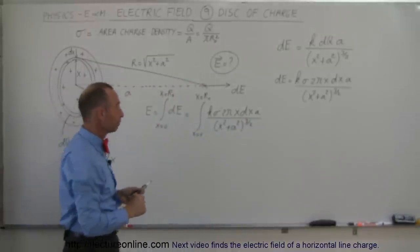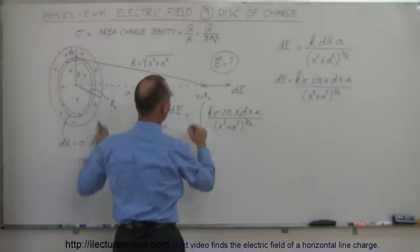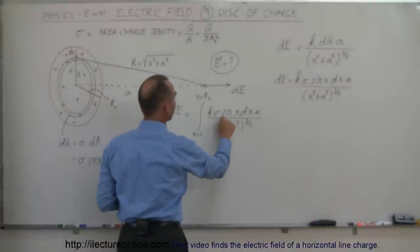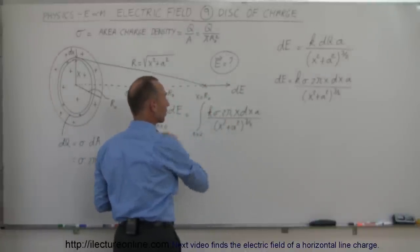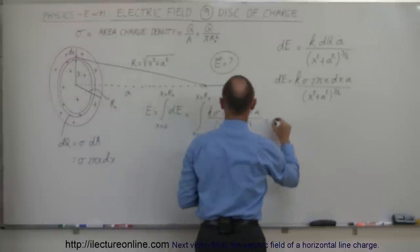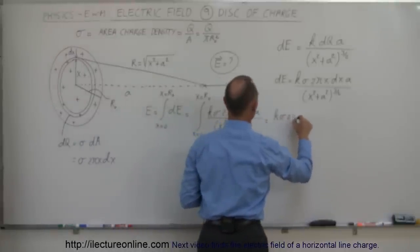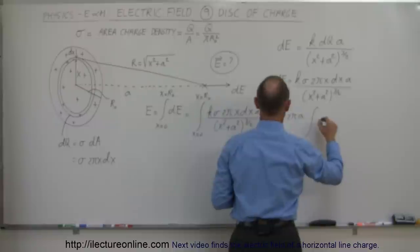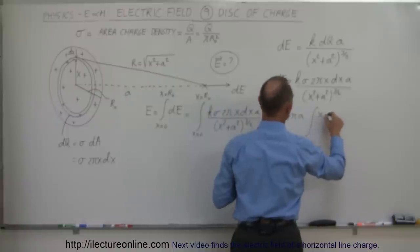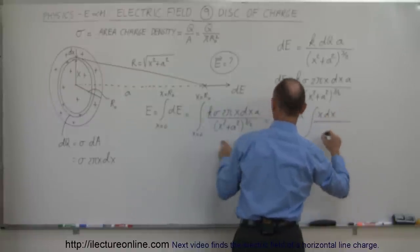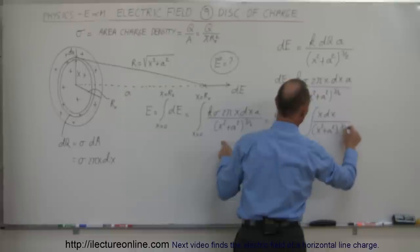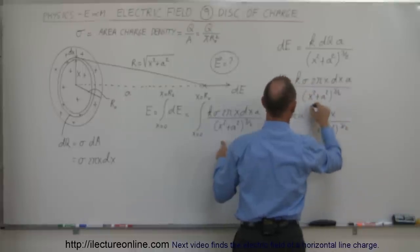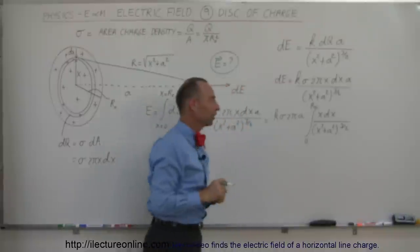In this integral we have a lot of constants. Notice that A, pi, 2, sigma, and K are all constant — they can all come out of the integral. So this is equal to K sigma 2πA times the integral from 0 to R-nought of x dx divided by X squared plus A squared to the 3/2 power.